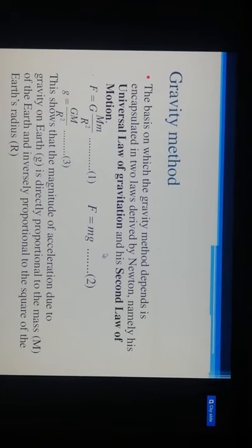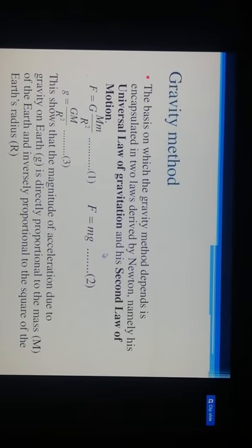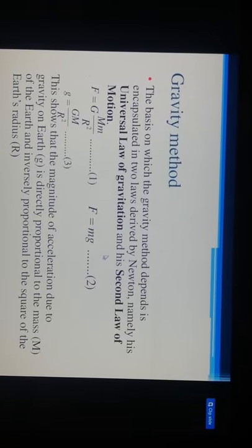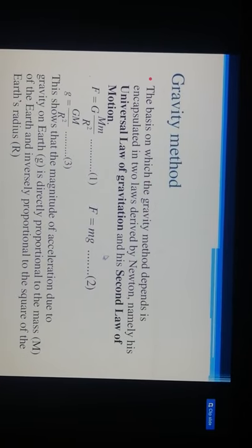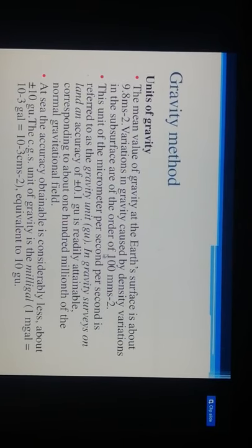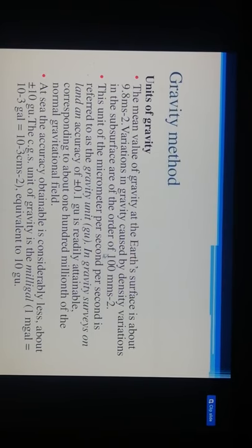Regarding gravity method units, the magnitude of acceleration due to gravity g is directly proportional to the mass M of the Earth, and inversely proportional to the square of the Earth's radius r. The main value of gravitational acceleration at the Earth's surface is about 9.8 m/s².